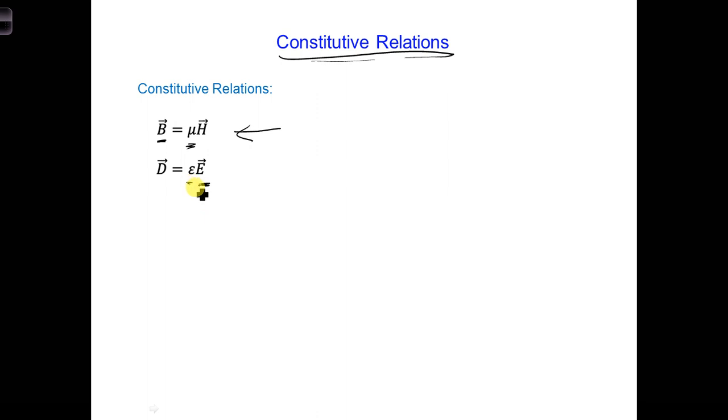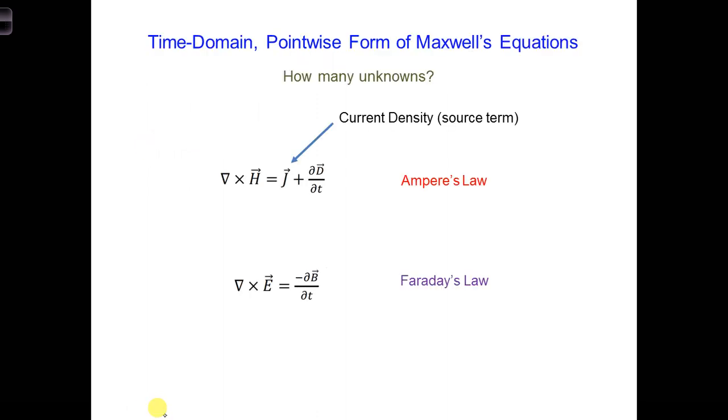So we'll talk more about these later, but for now, from these two constitutive relations, we can see that we can relate D to E and B to H. So returning to Maxwell's equations, if we can relate D to E, epsilon E, and B to H mu H...